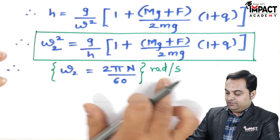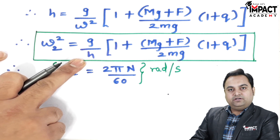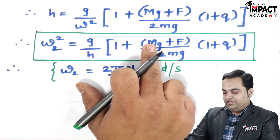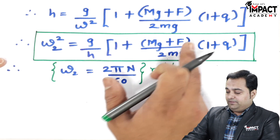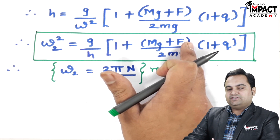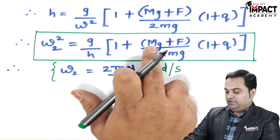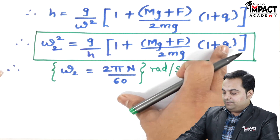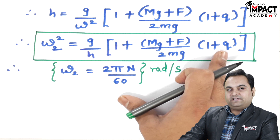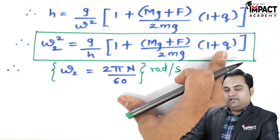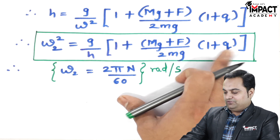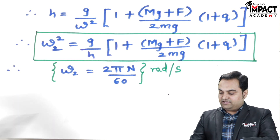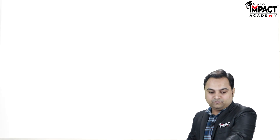Here g = 9.81, h is the height of the governor (known from geometry), capital M is the mass of the sleeve along with the dead weight, and F is the friction force added because the sleeve moves upward and friction acts downward, helping the dead weight. Small m is the mass of the fly ball, and Q is the ratio tan β / tan α. From this, ω₂ can be determined considering the effect of friction.